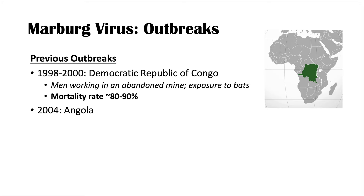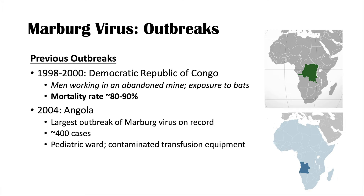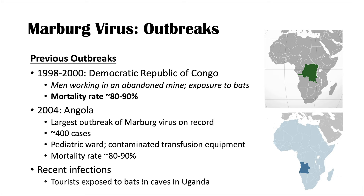Another outbreak occurred in Angola in 2004, just southwest of the DRC. This is actually the largest outbreak of Marburg virus on record, with 400 cases. What happened was there was spread of the virus in a hospital's pediatric ward through contaminated transfusion equipment. The mortality rate here was again very high — 80 to 90 percent. There have been some more recent infections since then, but not to the extent of the Angola outbreak.